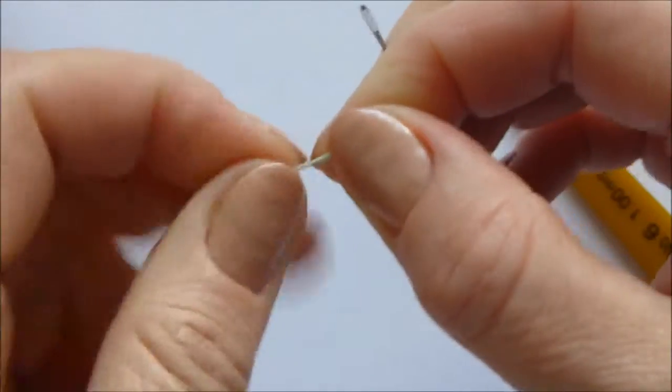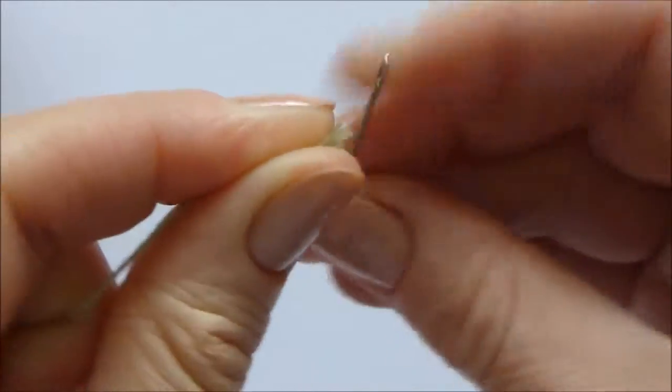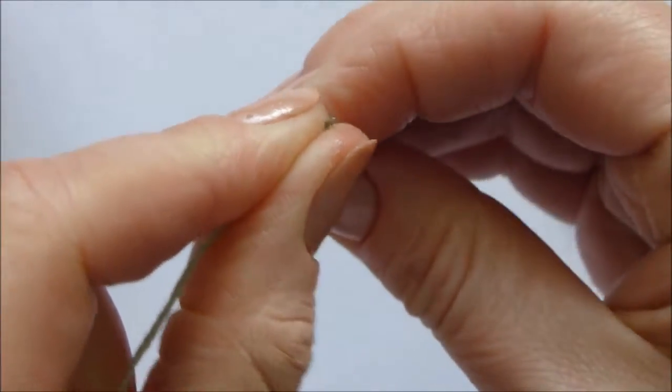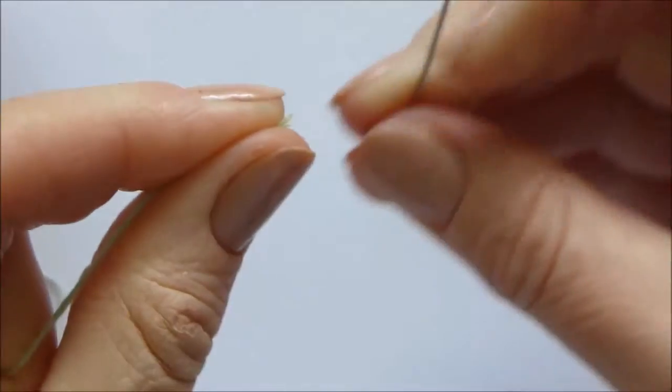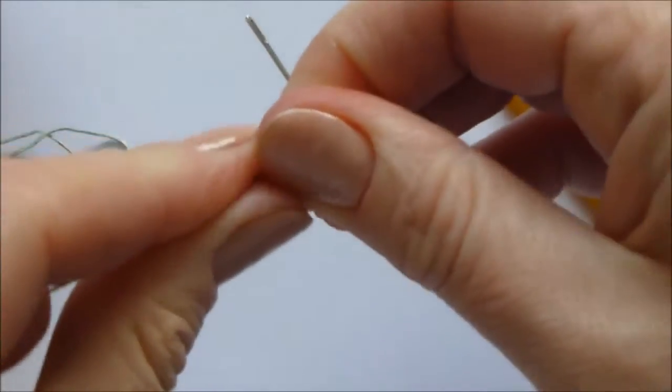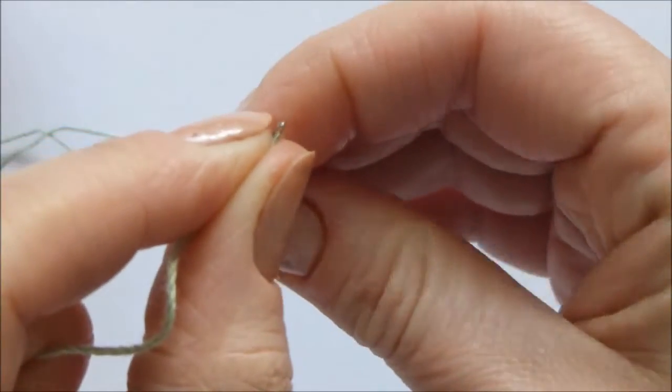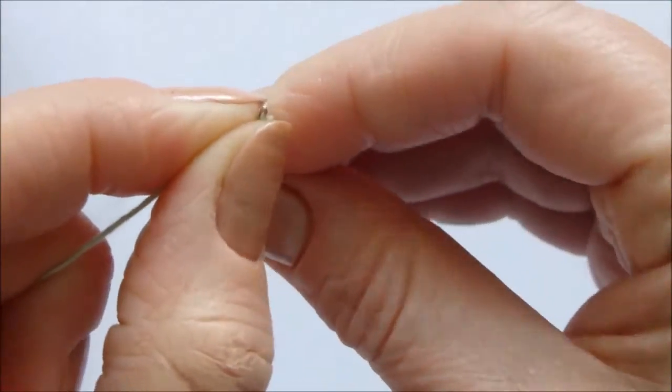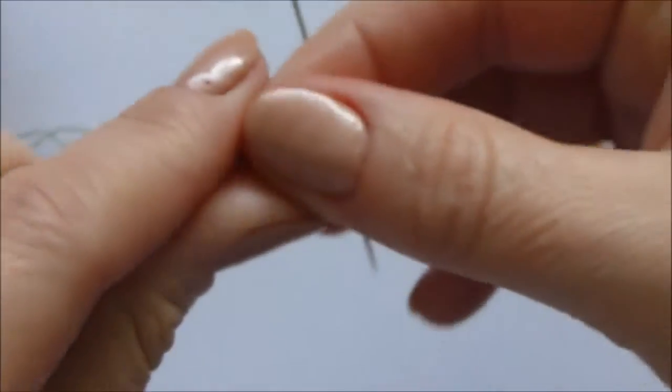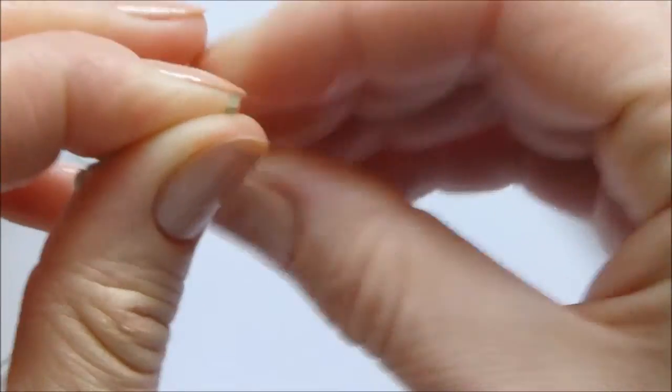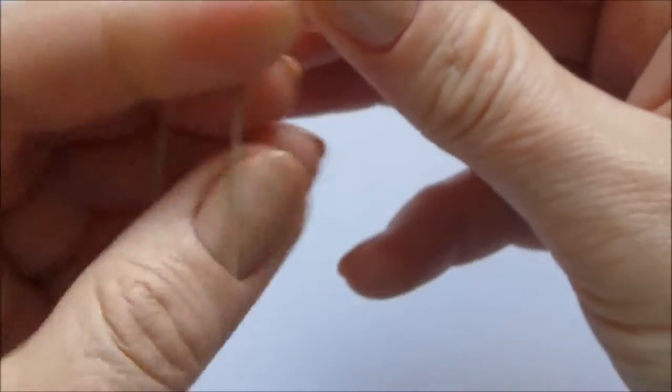Make sure not to split your thread, which is very easy to do depending on the thread and the eyelet of your needle. You can sometimes make the end of the thread a little wet with water. If it continues misbehaving, you can cut a piece off the end and try one more time.